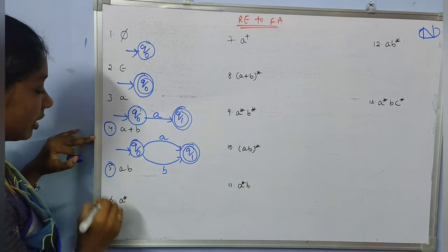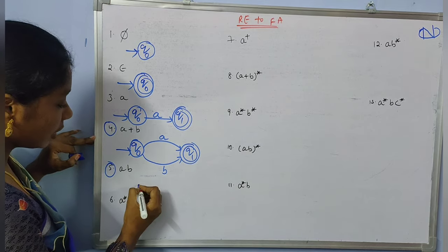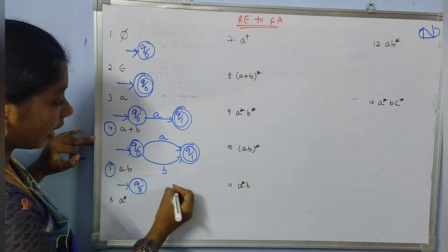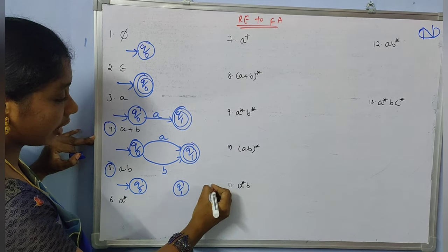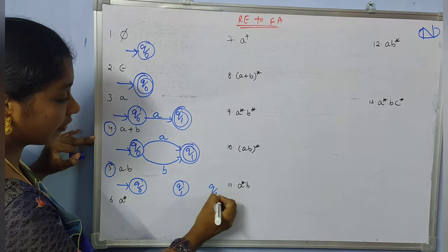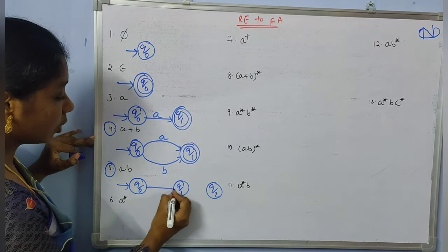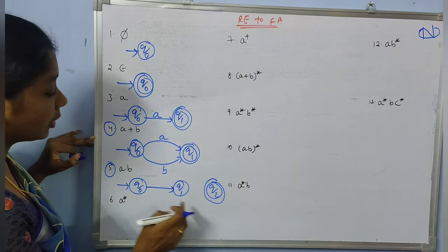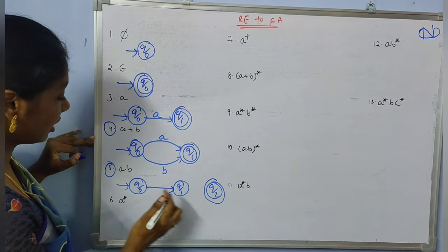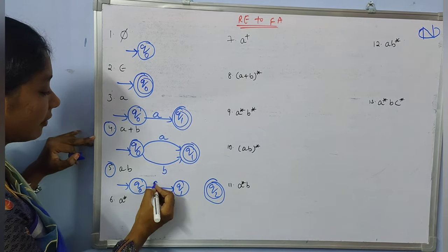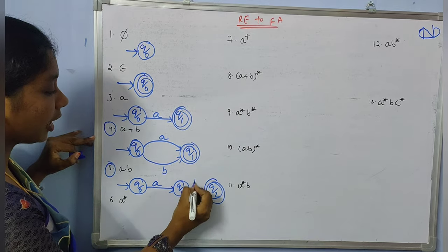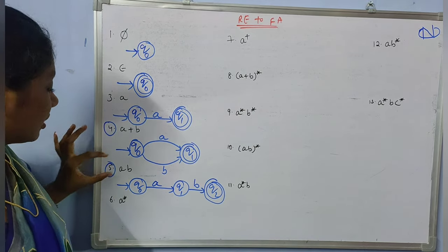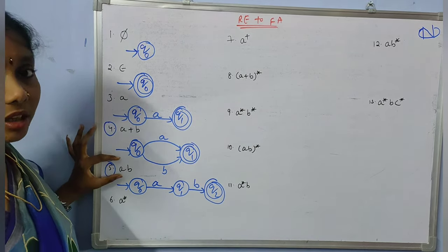Particularly for these two regular expressions — here I have an initial state, and another intermediate state, and a final state. To reach the final state, first I need 'a' and after that I need 'b'. So this is the finite automata for the regular expression 'ab'.